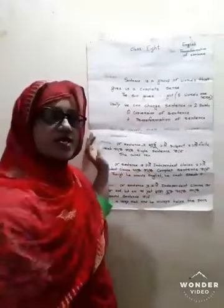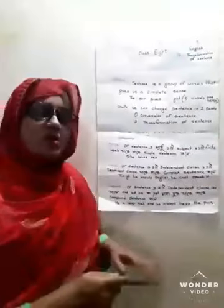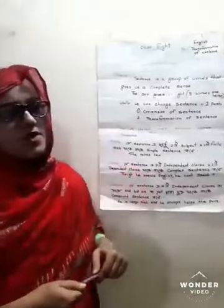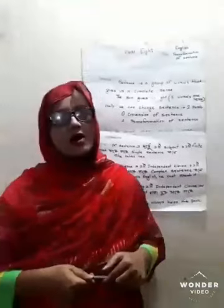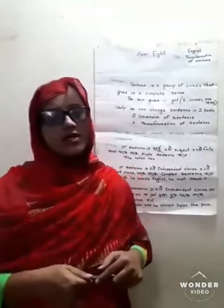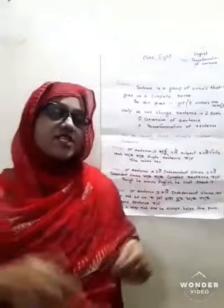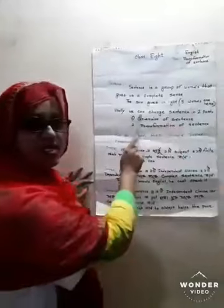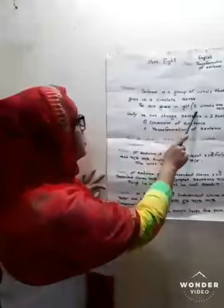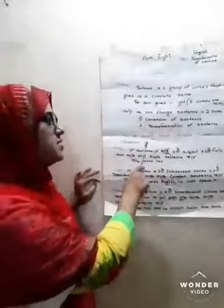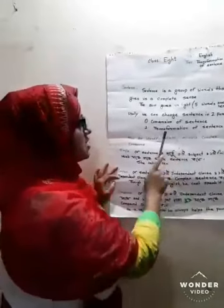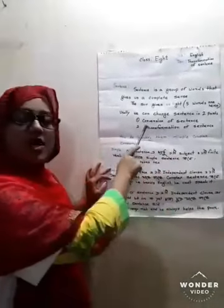First we have to know what a sentence is. A sentence is a group of words that gives us a complete sense. For example, 'The Sun gives us life' — how many words are there? There are five words. Usually we can change sentences in two ways: conversion of sentences and transformation of sentences.